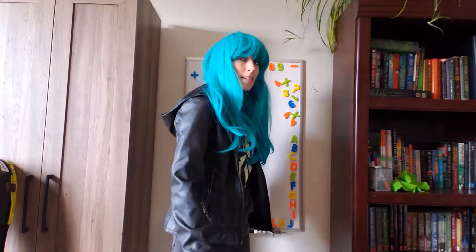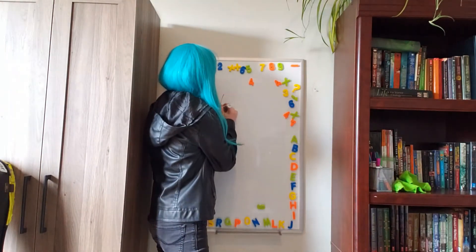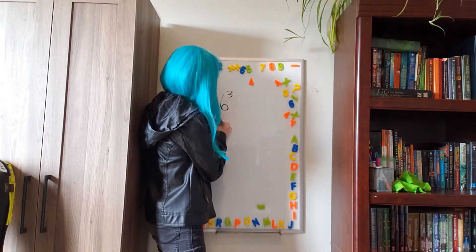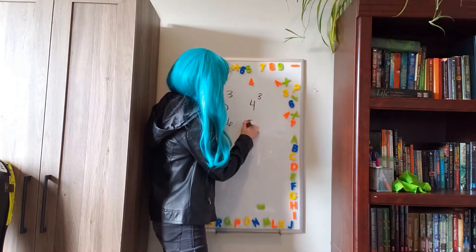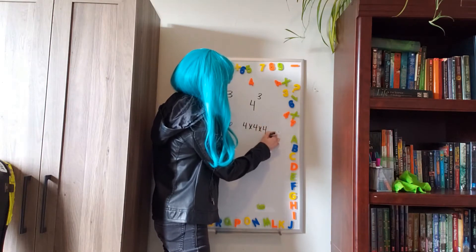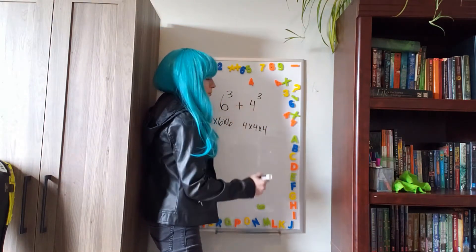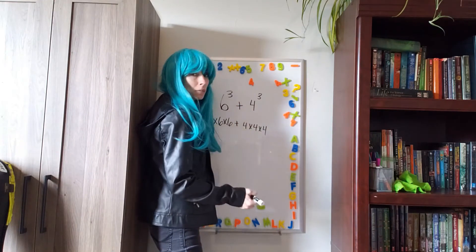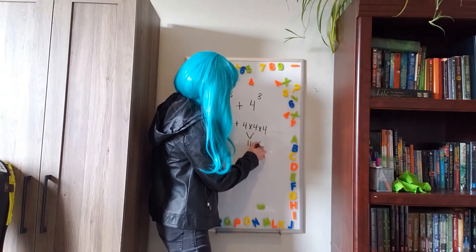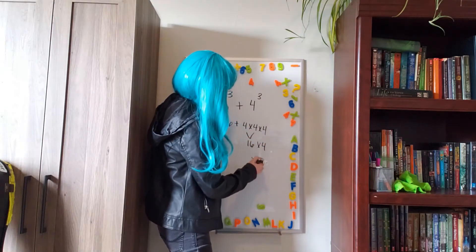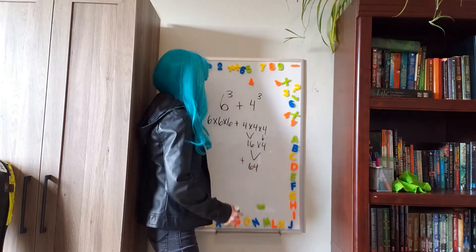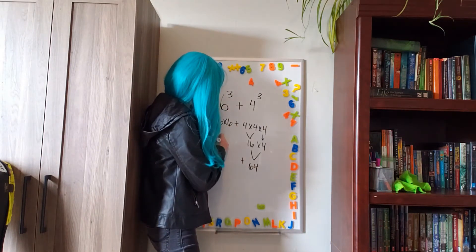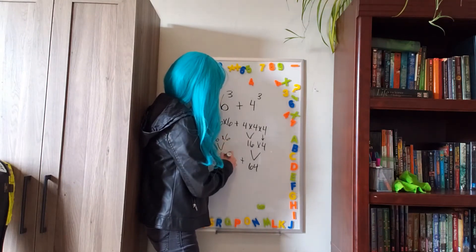The professor is trying to solve 6 plus 4 cubed. I know that 6 cubed is really 6 times 6 times 6. And I know that 4 cubed is really 4 times 4 times 4. And if I'm adding them together, that means I'm looking for the sum of these two amounts. Well, 4 times 4 is 16, and 16 times 4 equals 64. So I have to add that amount to my other amount. 6 times 6 is 36, and 36 times 6 equals 216.